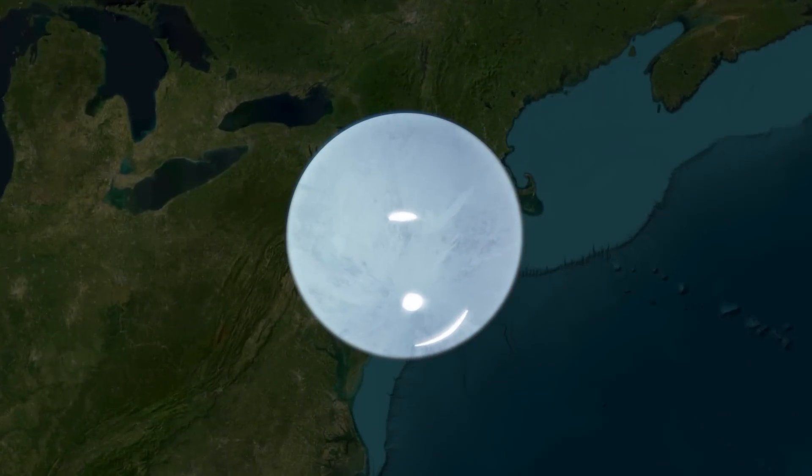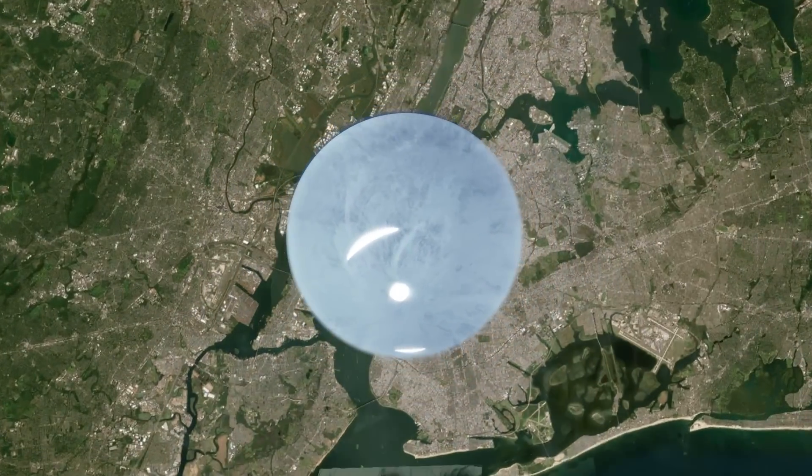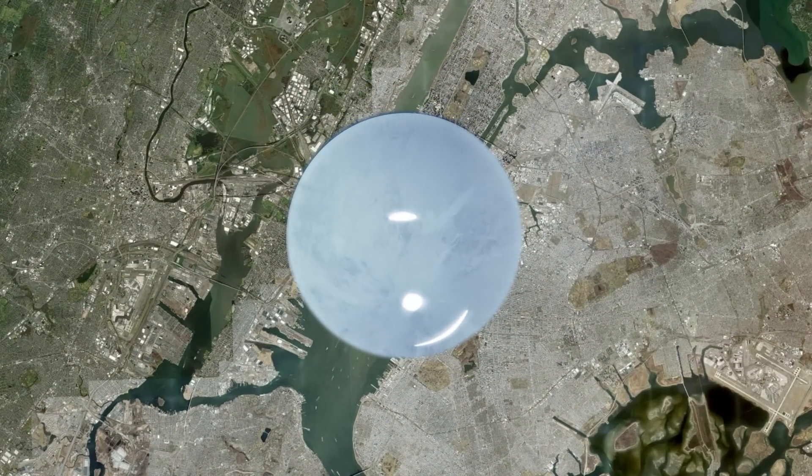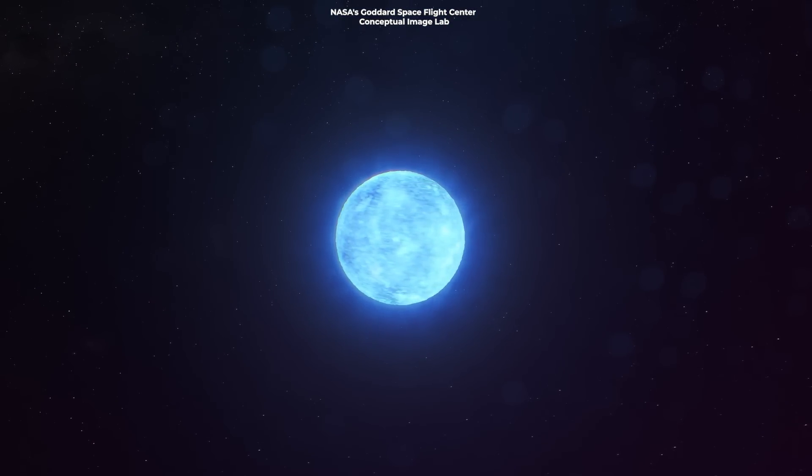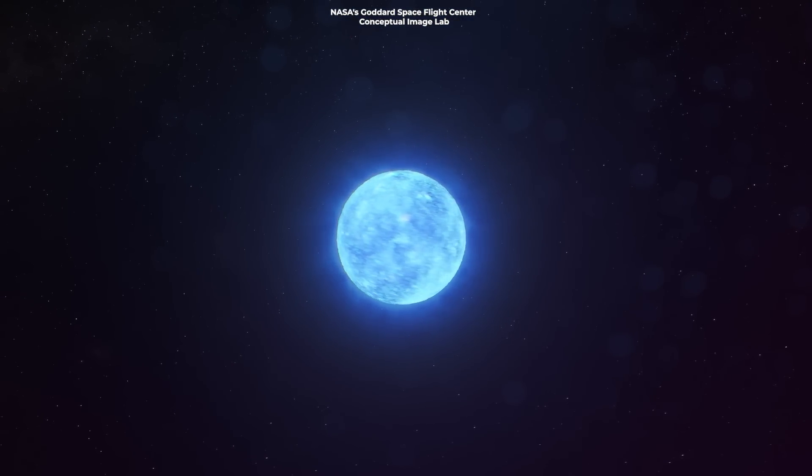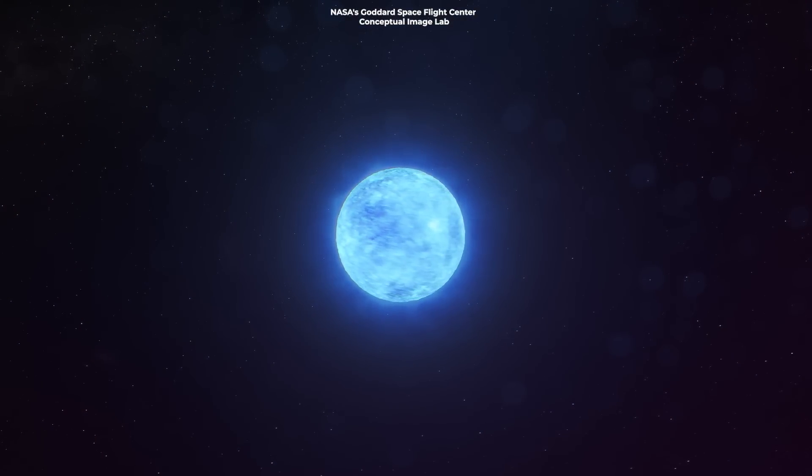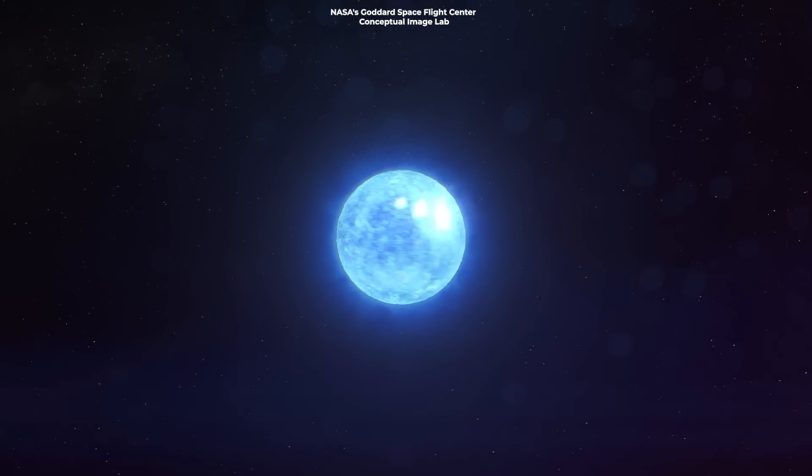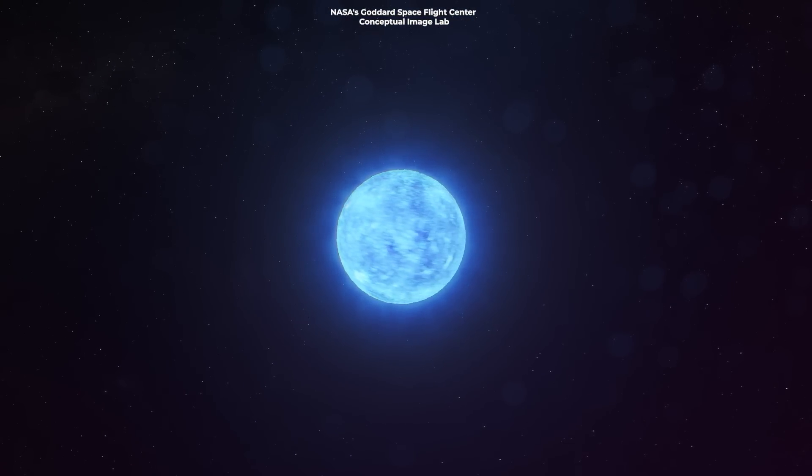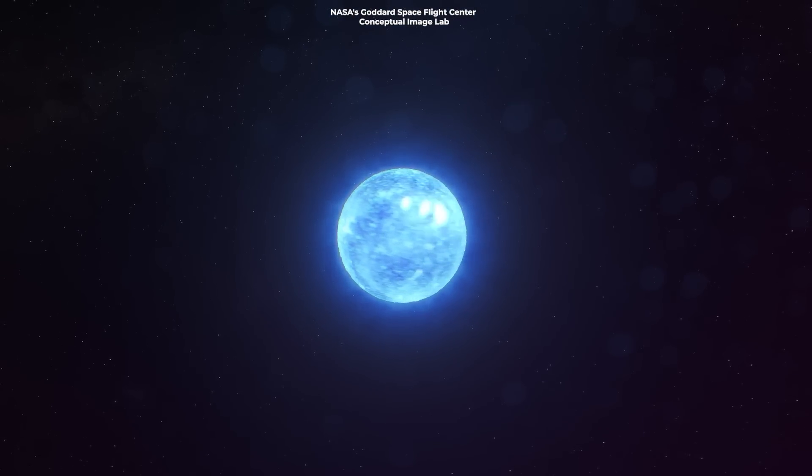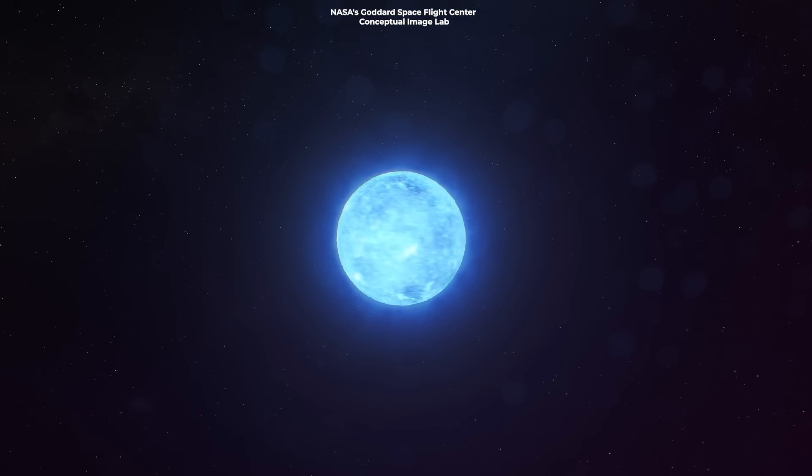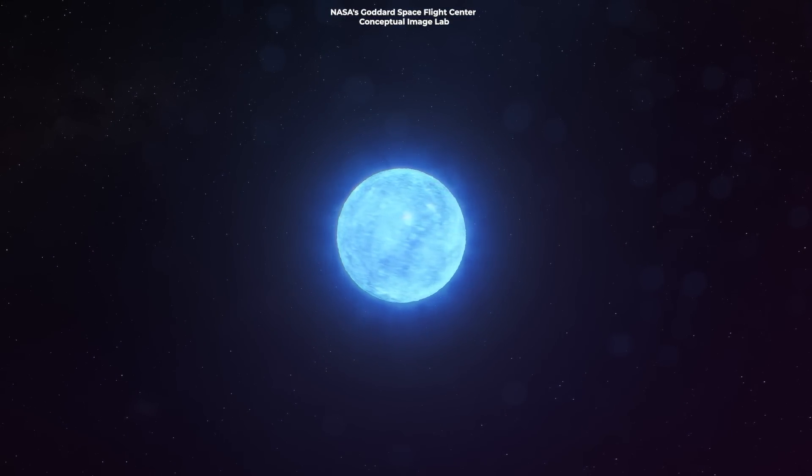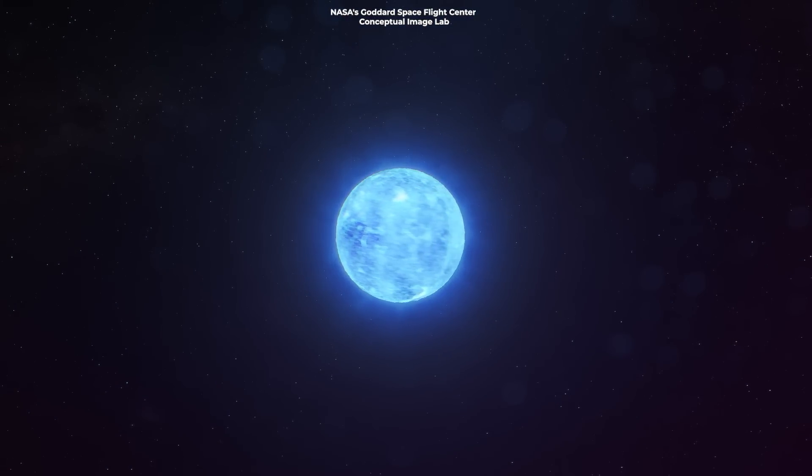Ever heard of a neutron star so dense it could fit the mass of the Sun into a city-sized sphere? It's not just the perfect shape that makes them interesting, but their extreme gravity is so intense it can even trap light itself. They're incredibly dense and have gravity so strong that despite spinning at thousands of rotations per second, they're some of the most spherical objects in the universe. Talk about peer pressure. Gravity doesn't let them bulge out.